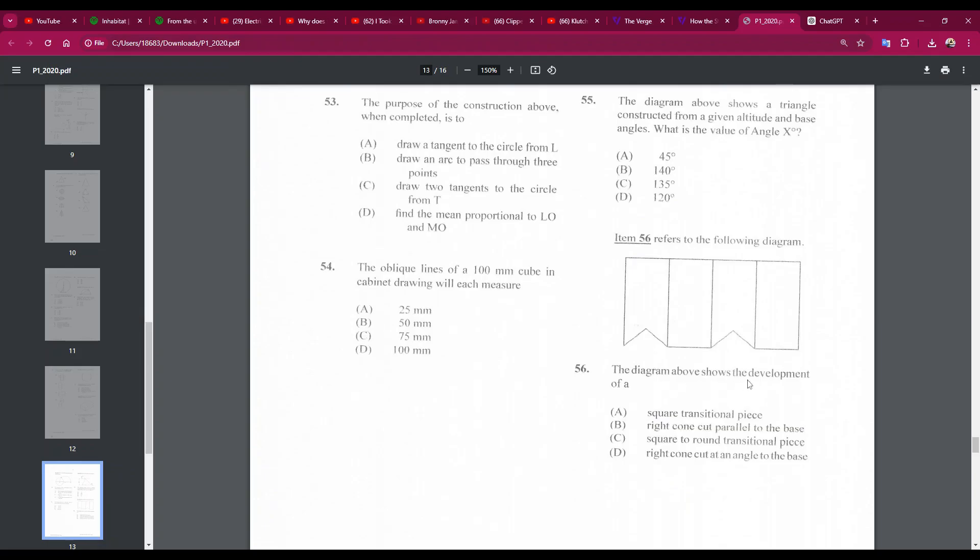The diagram above shows the development of a square transitional piece, right cone, cut pearl, square to round, right cone. The answer is A. The answer is A. It's a square transitional piece.